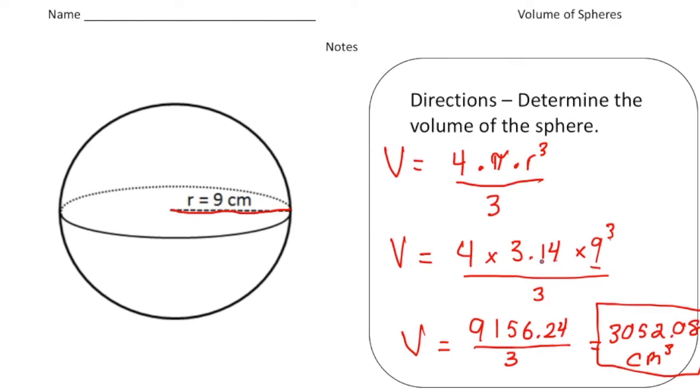So when I did four times pi times nine times nine times nine, I got a value of 9,156.24, and then when you divide that by three, you get a final answer of 3,052.08, and that'd be cubic centimeters.